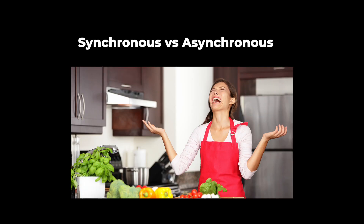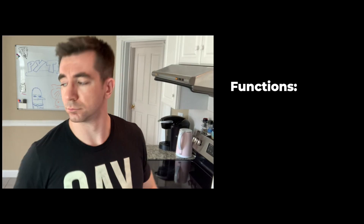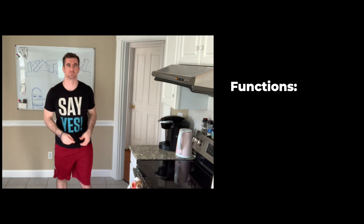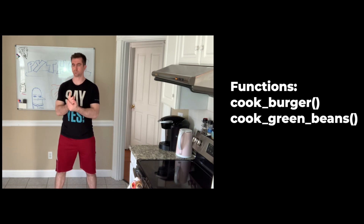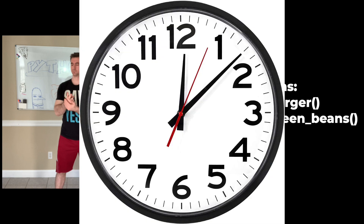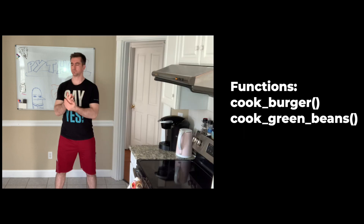Still confused? Don't worry. Let's look at a synchronous versus asynchronous example using cooking as the analogy instead of programming. This guy is your Python code. He needs to cook dinner, which consists of a burger and green beans. These functions — cook burger and cook green beans — are analogous to making API calls or doing some type of input-output operation, because we need to wait for them. We need to wait for the API calls to be returned.